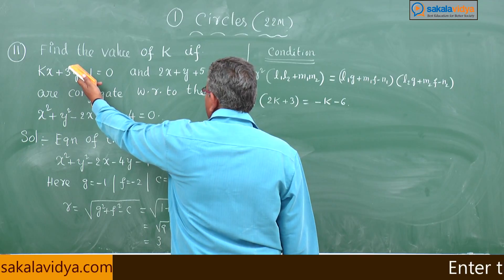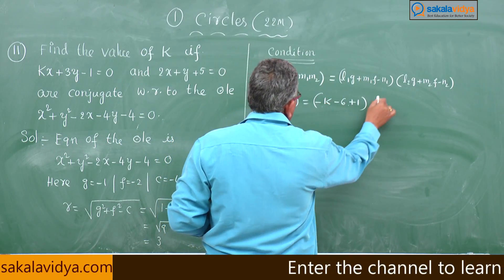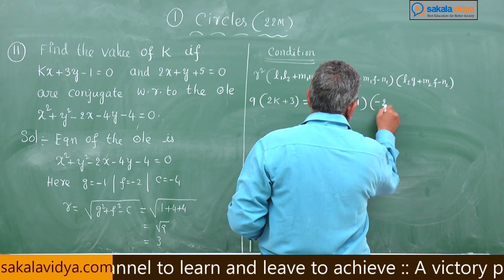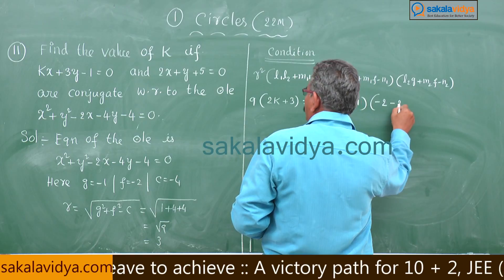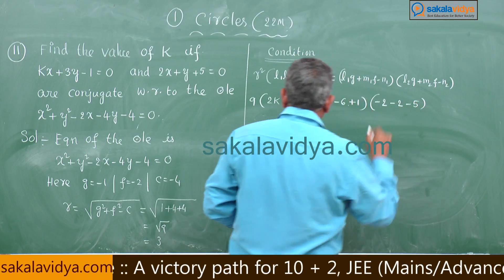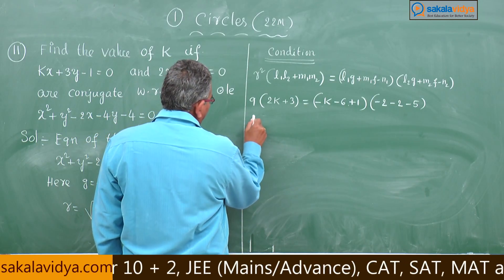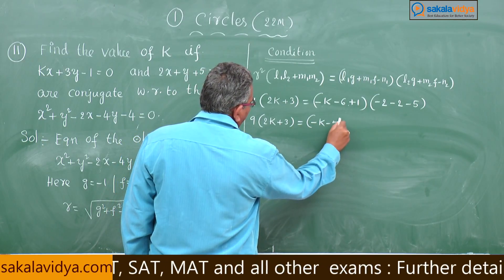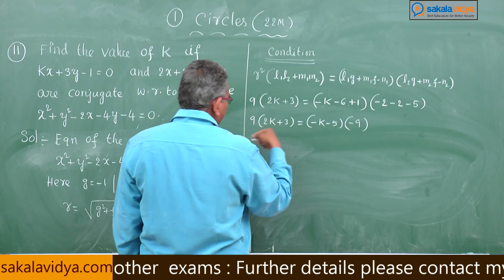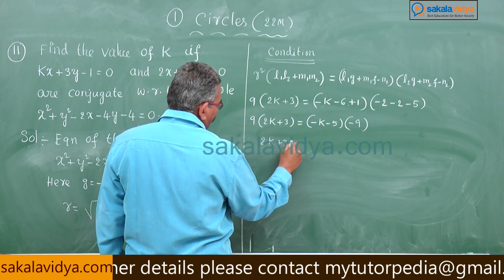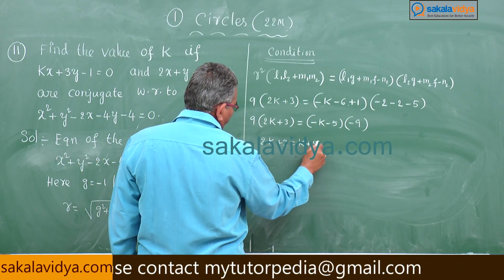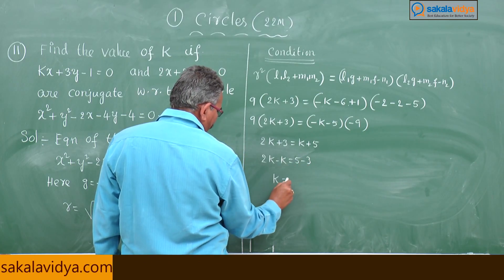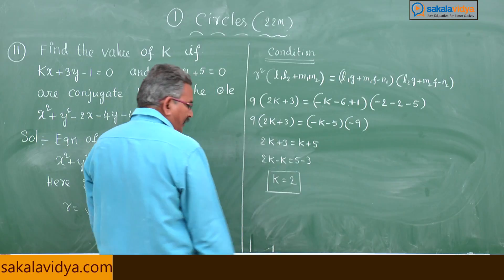Simplifying: 9(2k + 3) = (-k - 5)(-9). So 9(2k + 3) = 9(k + 5), and the 9s cancel: 2k + 3 = k + 5. Bringing k to one side: 2k - k = 5 - 3, so k = 2. Therefore k = 2.